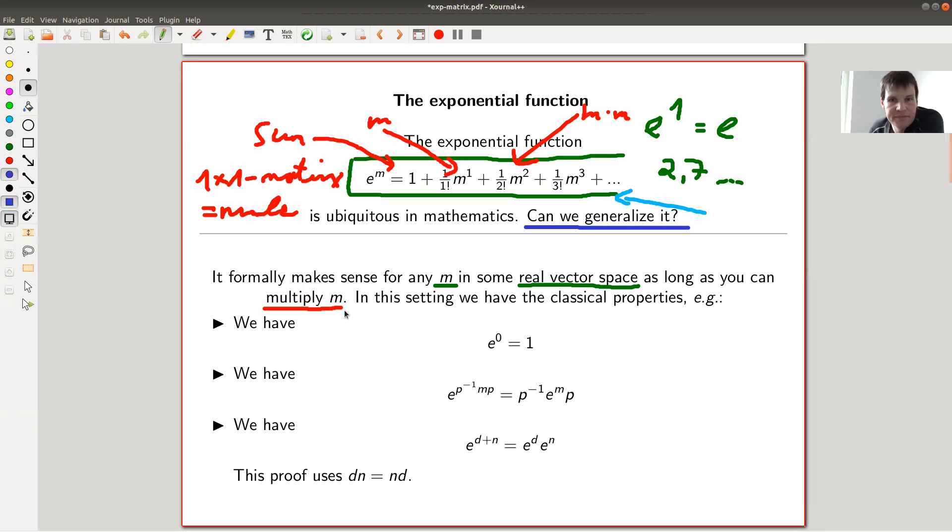So without worrying about convergence, this definition looks really good if you can multiply m with scalars and with itself. Right? And then you would observe that actually you have some classical properties of exponential function like e to the zero is one. Okay, you basically look at the proof, you basically don't need to know anything about it. It just follows by definition, you just plug in zero here. Yeah, it looks like what should follow from the definition. This will also follow directly by definition because you have numbers and those two numbers commute.